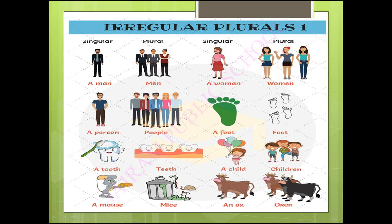A foot — the plural form for foot is feet. A child — and here so many, we write children. And ox — plural: oxen. So these are a few examples for you children.